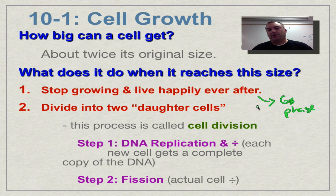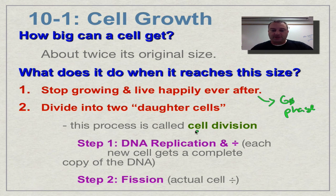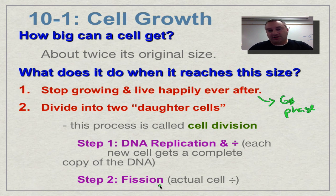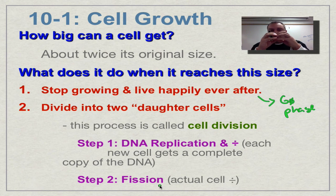If the cell does not go into the gap zero phase, it must divide. The cell splits into two daughter cells — one mother cell divides into two daughter cells — in a process called cell division, which is what most of this chapter covers. Cell division has two basic steps: step one is DNA replication, because each daughter cell needs a complete set of genes; and step two is fission, which simply means to split. Once the DNA is copied and there's enough for two complete cells, the cell divides into two daughter cells.